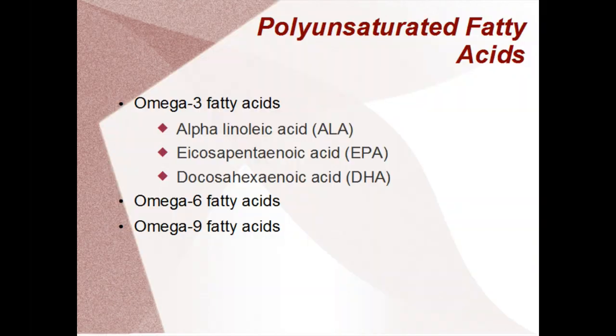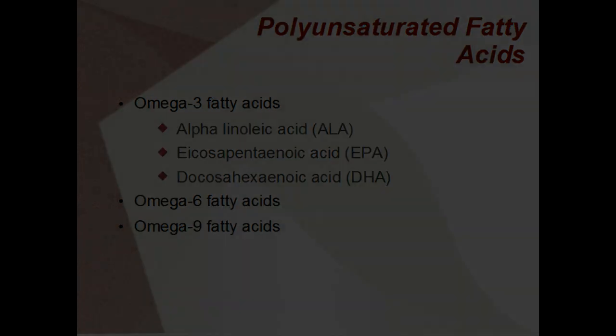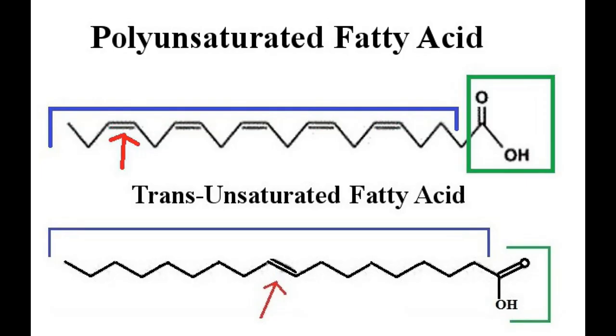Polyunsaturated fats are also a blanket term that encompasses many types of fat you may have heard of. This includes all types of omega-3 fatty acids, including alpha-linoleic acid, eicosapentaenoic acid, and docosahexaenoic acid, as well as omega-6 and omega-9 fatty acids. It's important to appreciate that omega-3, omega-6, and omega-9 fatty acids are types of polyunsaturated fatty acids. Technically, trans fatty acids are also unsaturated — they have a carbon-carbon double bond, as you can see in this picture.